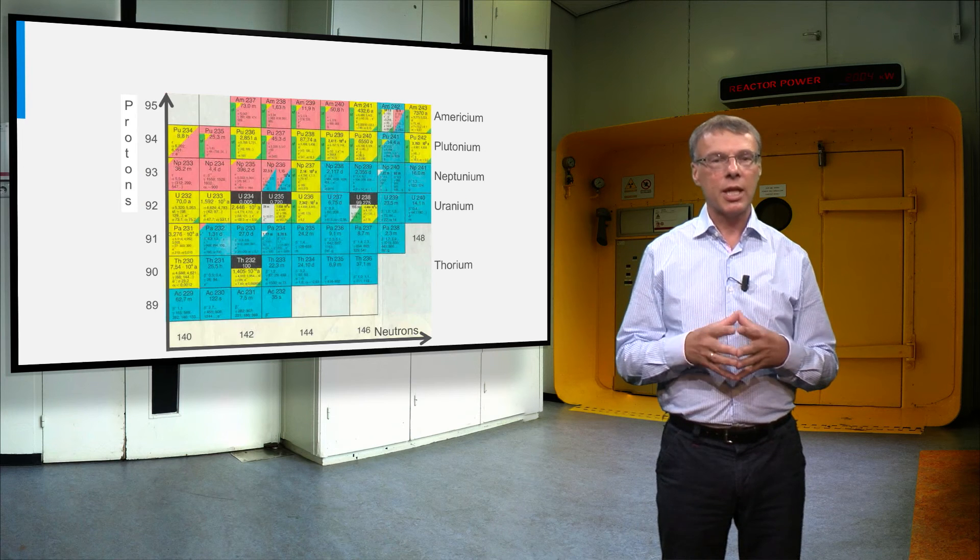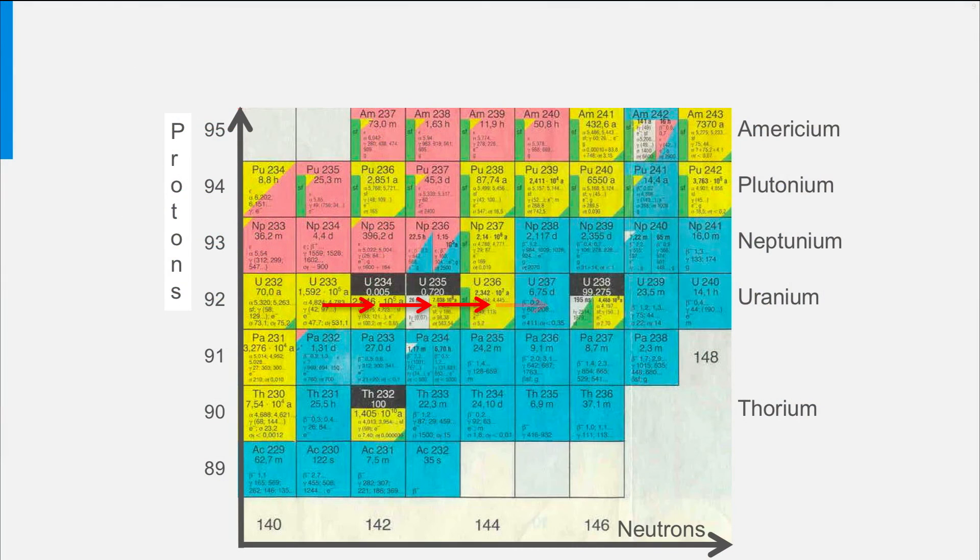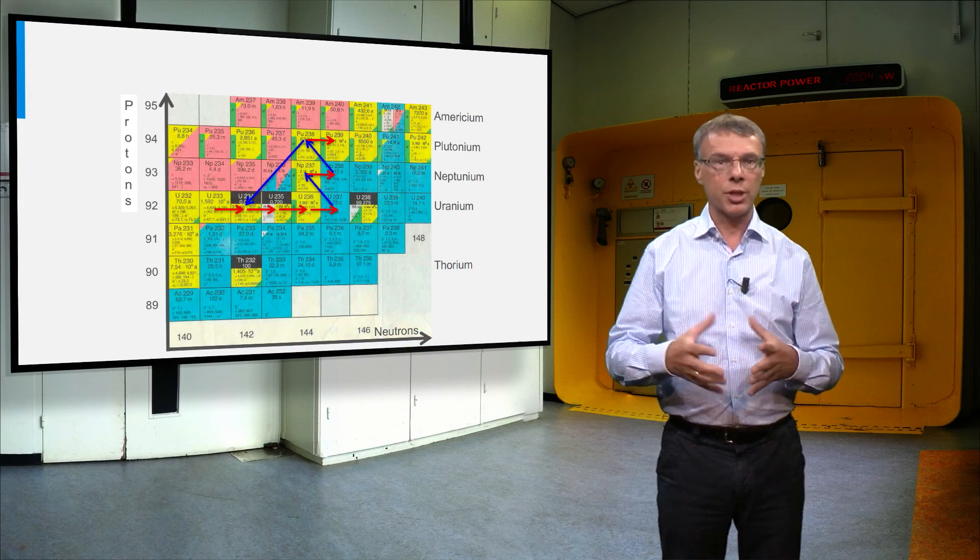The reason for this can easily be seen in this plot. Because we start with thorium-232 as a breed material and uranium-233 as a fissile material, we need four neutron capture reactions before we produce neptunium and plutonium and other actinides. And this means these actinides are produced in much smaller quantities than in a light water reactor.